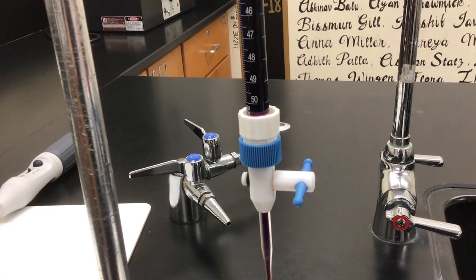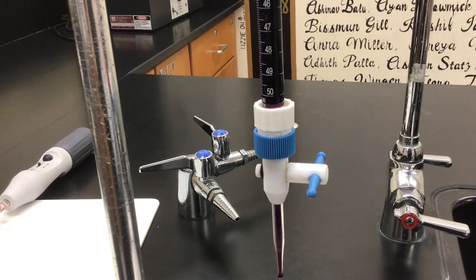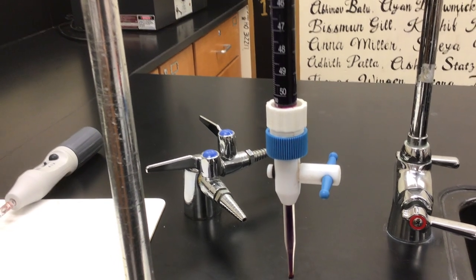So usually we pour things out of the top, because the burette adds things from the bottom. The numbers are turned upside down.